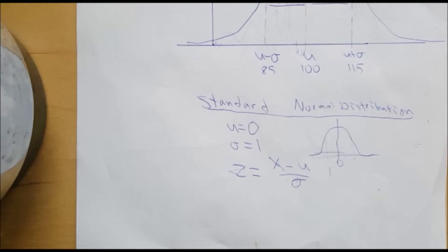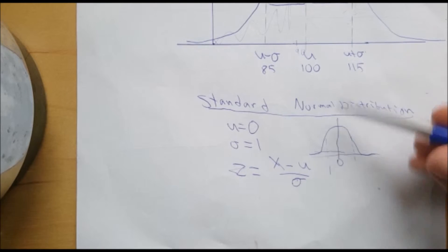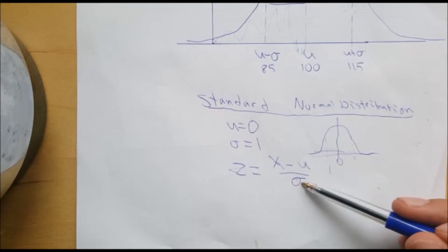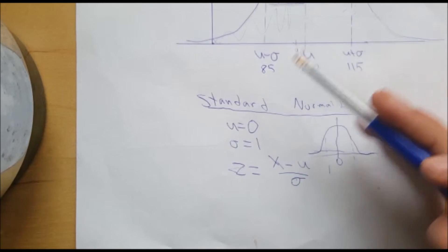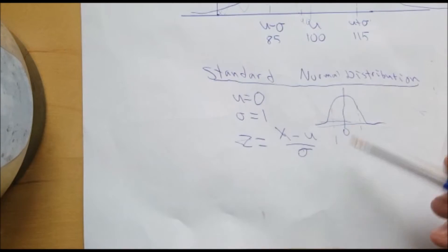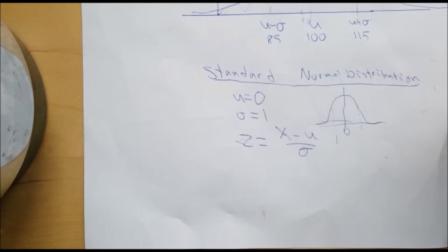The standard normal distribution can be used to find either the mean or the standard deviation of any normal distribution curve as long as you know one of them and you know the probability of a given X value.